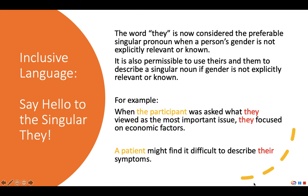One of the most exciting changes introduced by APA 7 is the endorsement of 'they' as a singular pronoun. In past editions, APA stated that if you have a singular noun such as a participant or a patient, you must use 'he or she' as the pronoun. In an effort to be more inclusive of people who may not identify as gender binary and to avoid assumptions about individuals' genders, APA 7 has joined many other style guides in recommending that unless a person's gender is explicitly known, it is preferable to use 'they' as the singular pronoun.